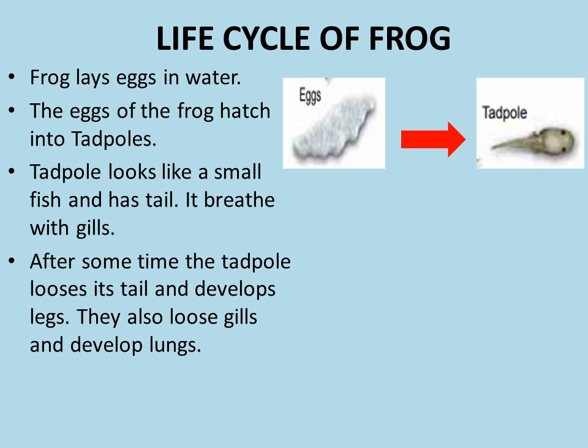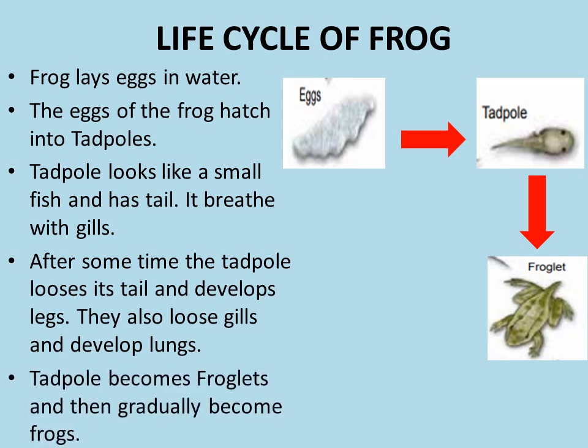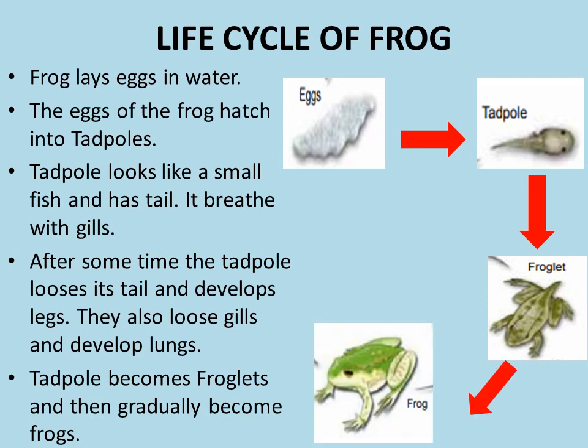After some time, the tadpole loses its tail and develops legs. They also lose gills and develop lungs. Tadpole becomes froglets and then gradually becomes a frog. This is the life cycle of frog — the eggs convert into tadpoles, the tadpoles convert into froglet, and the froglets convert into an adult frog.